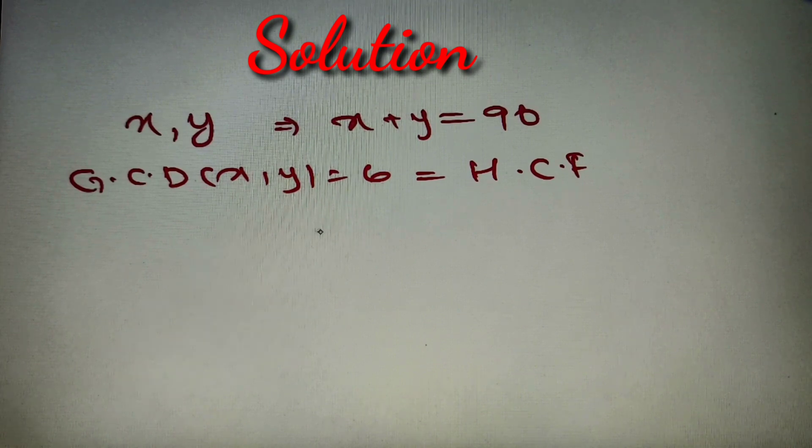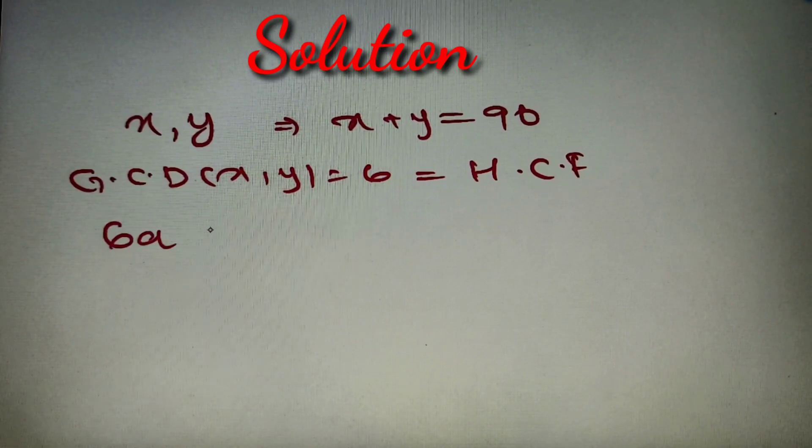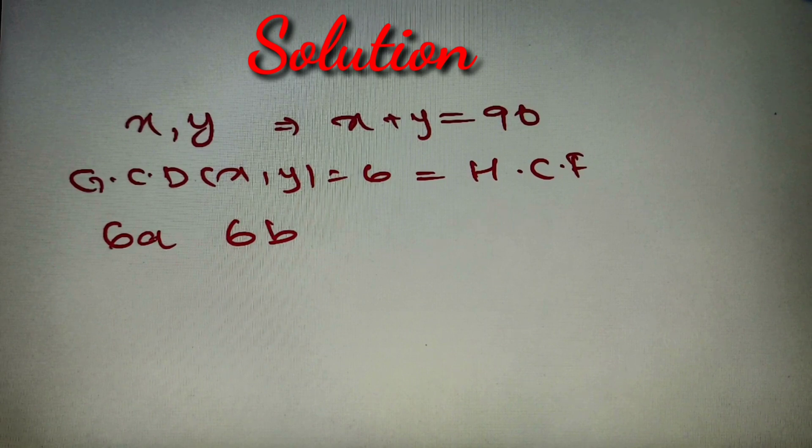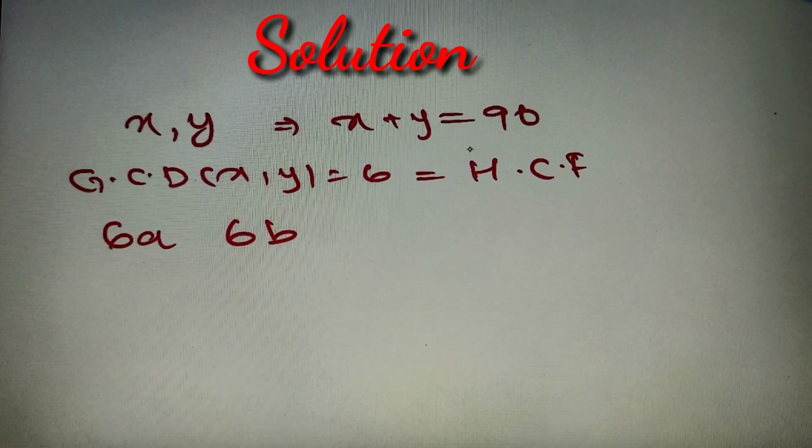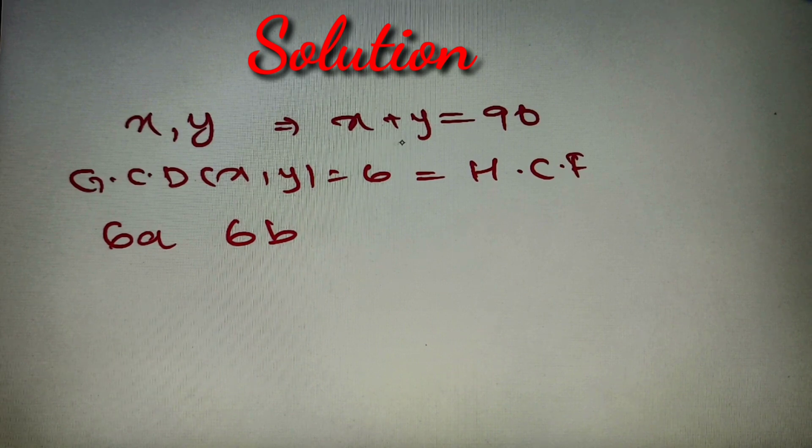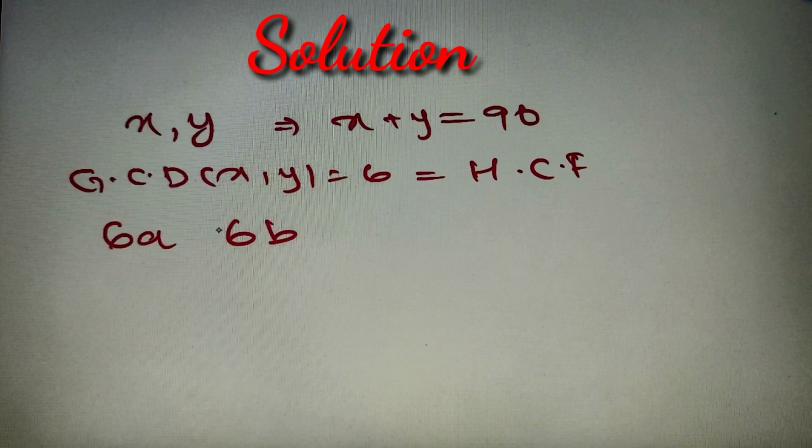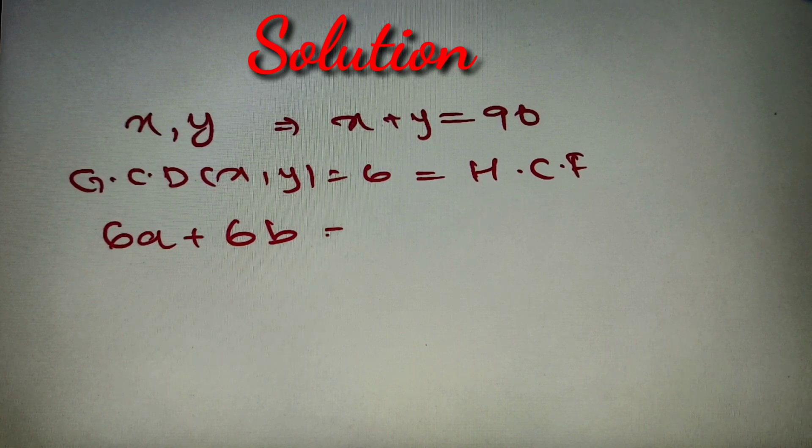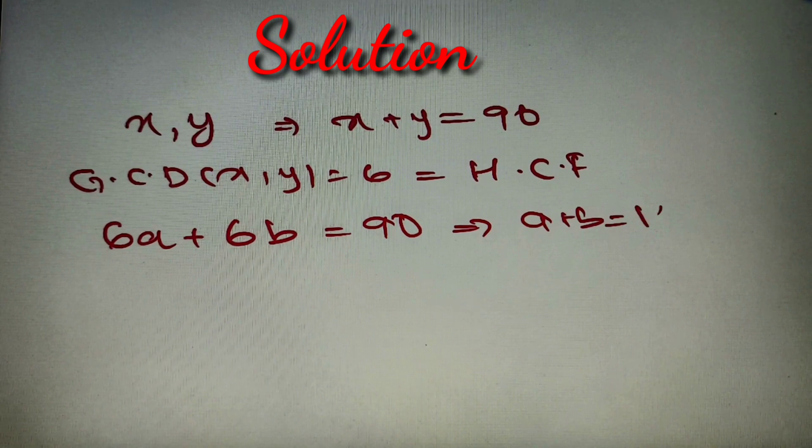When we say that two numbers have the highest common factor or greatest common divisor as 6, then we can say that the numbers are of the form 6a and 6b, where a and b are greater than 0. We have to find the number of ordered pairs for which x, y will satisfy both conditions. If x + y = 90, then 6a + 6b = 90, or we can say that a + b = 15.